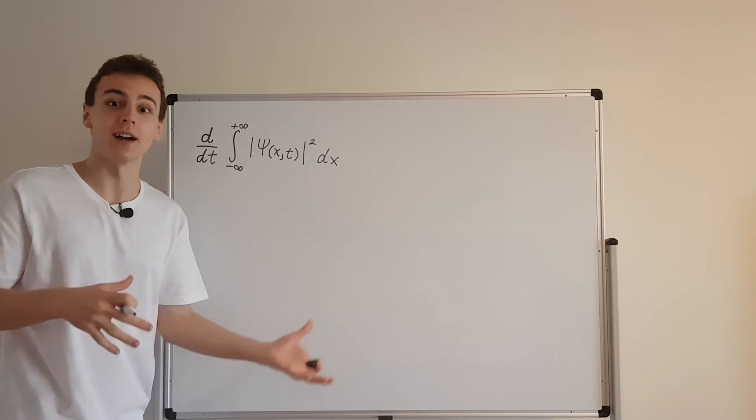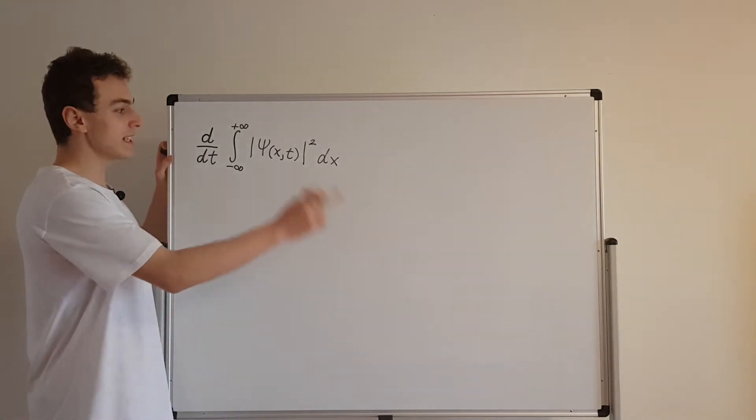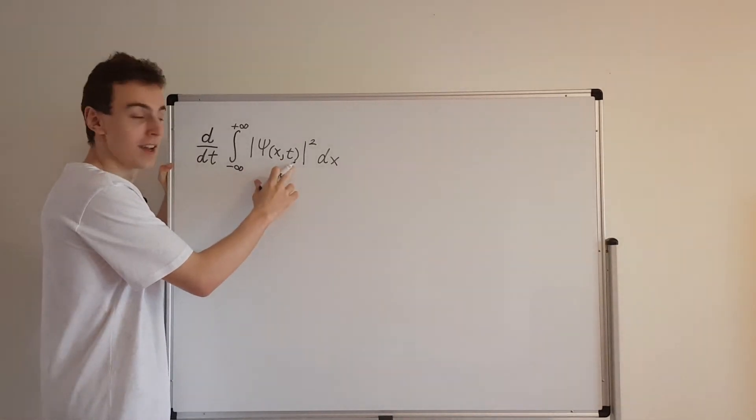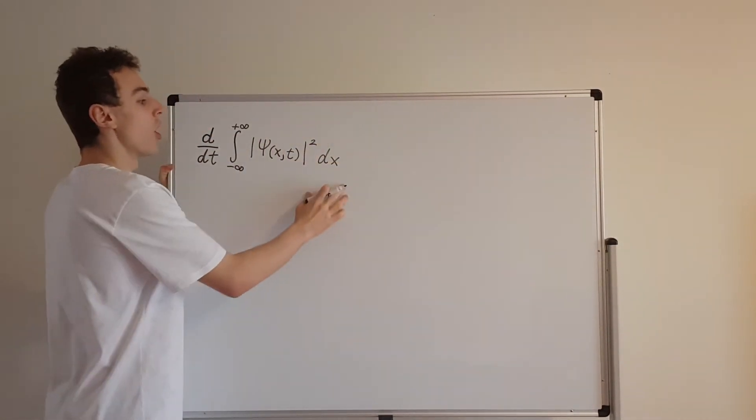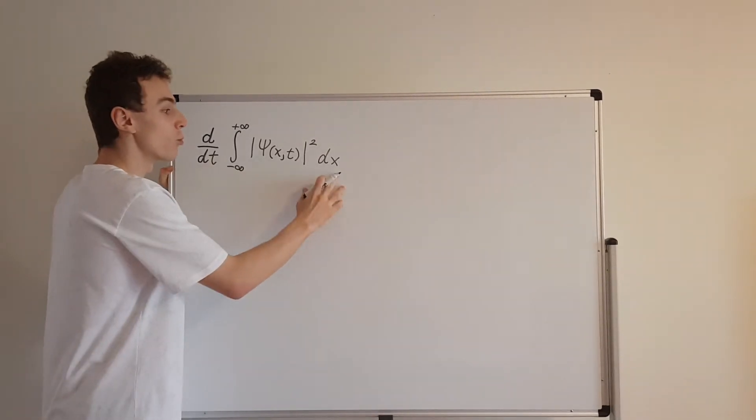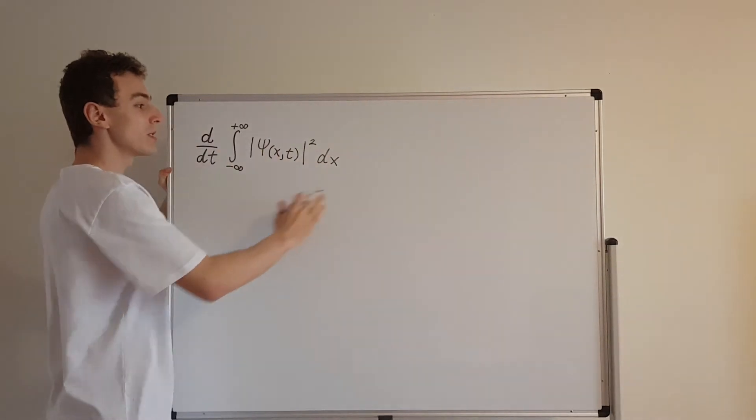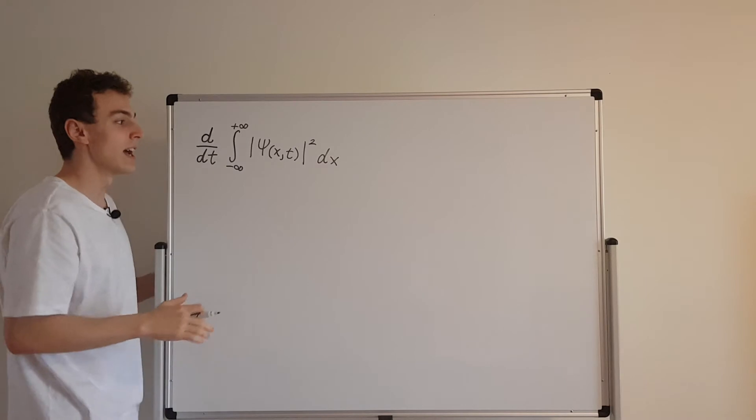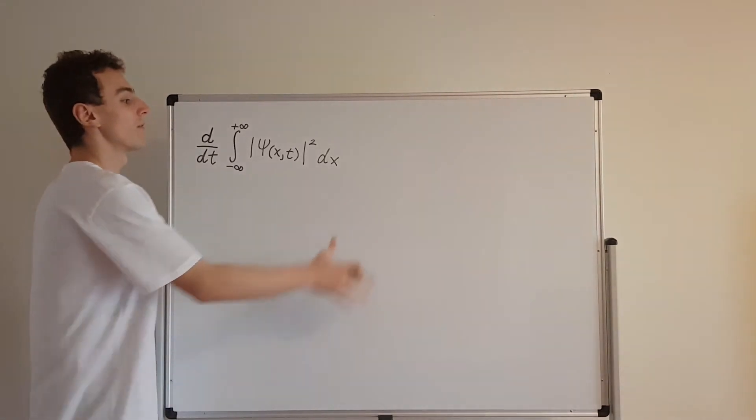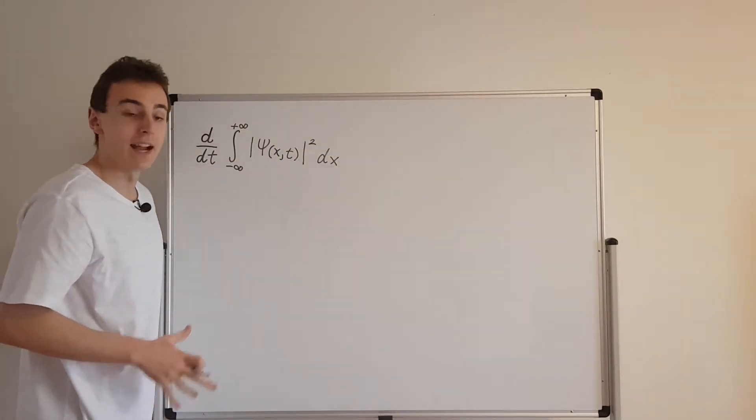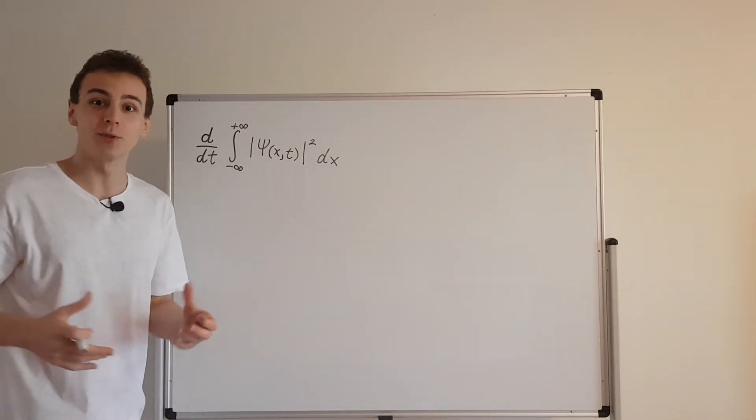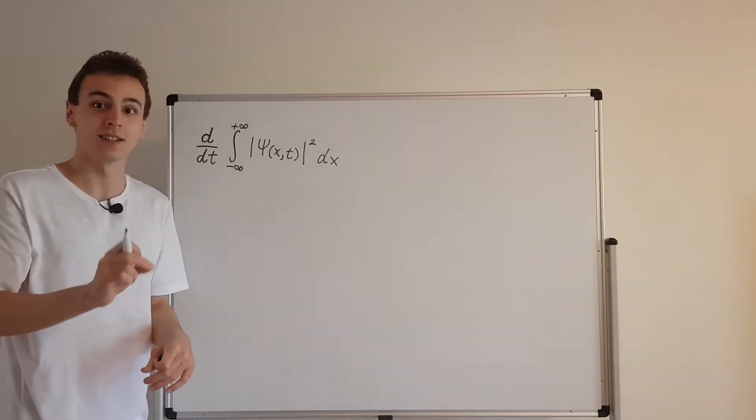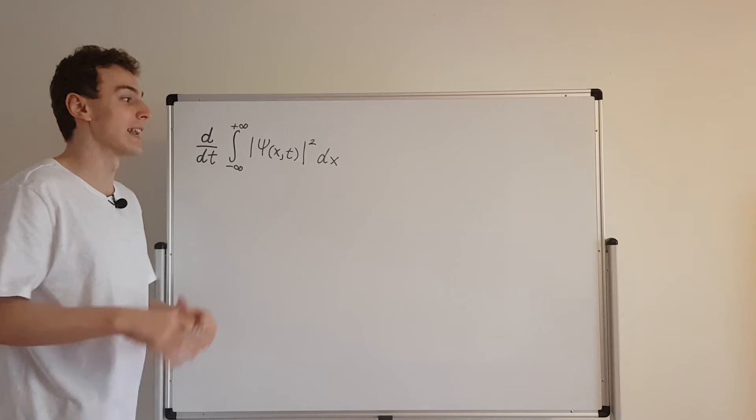Normalization is preserved with time. So you can actually see I've written explicitly that this wave function depends on x and on t. But this integral only depends on t because we're integrating with respect to x. If we integrate with respect to x and we evaluate from these bounds from minus infinity to plus infinity, that's actually going to get rid of the x. So we're just going to be left with a function of time. And it turns out this function of time is a constant. So it doesn't even depend on time. It's just a constant that we set equal to 1 at the beginning. So t equals 0, we normalize the wave function and it stays normalized.